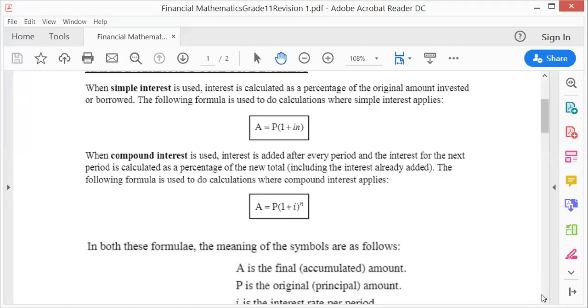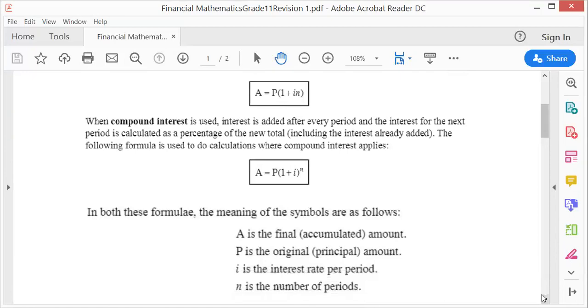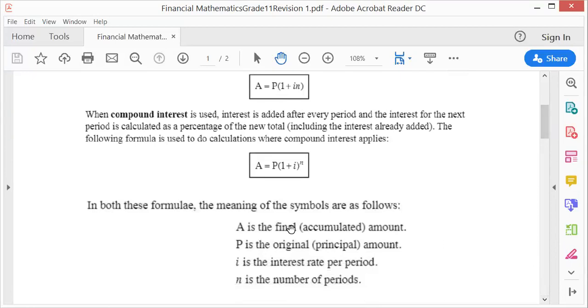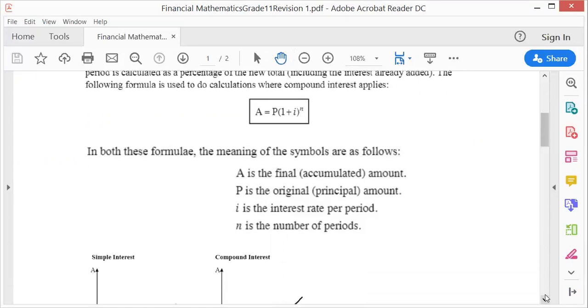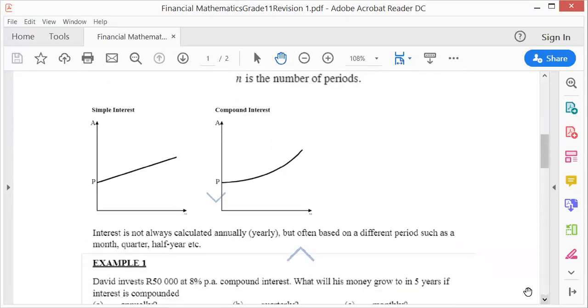Let's see what each symbol means. A is the final amount, P is the principal or initial amount, i is the interest rate where i = r/100, and n is the number of periods.